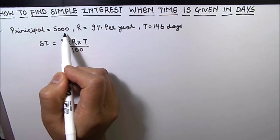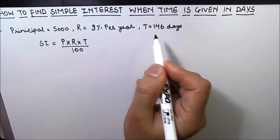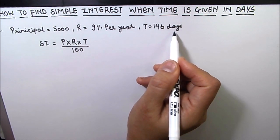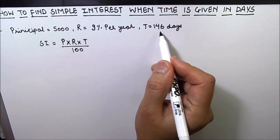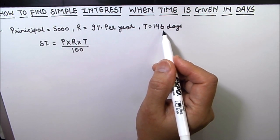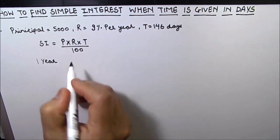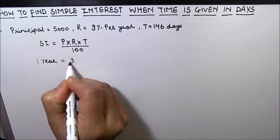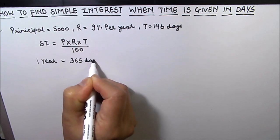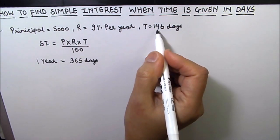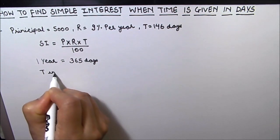We have been given principal amount as 5000 rupees, rate of interest as 9 percent per year, and time is given in days. For finding the simple interest, we need to convert this time period which is given in days into years. We know that one year is equal to 365 days.